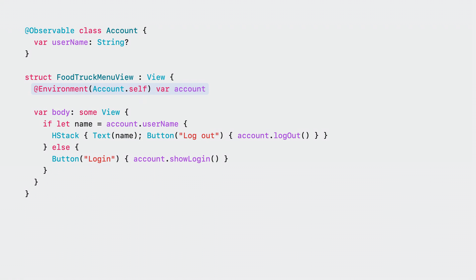Next up, @Environment. Environment lets values be propagated as globally accessible values. This lets things be shared in many places. Observable types work fantastically here since the updates created by them are based upon access.